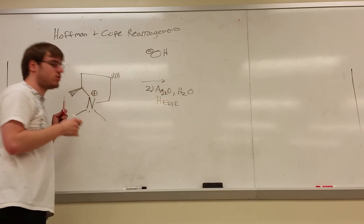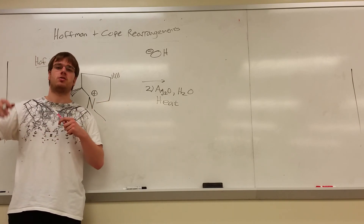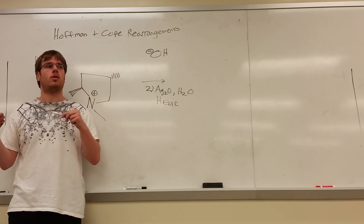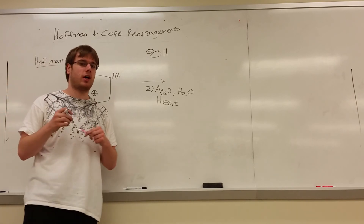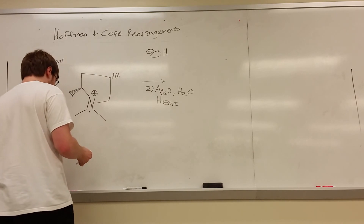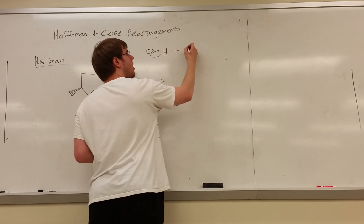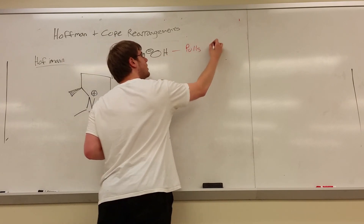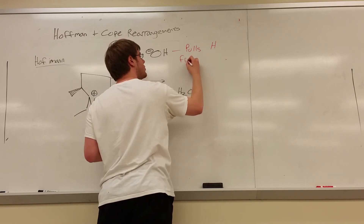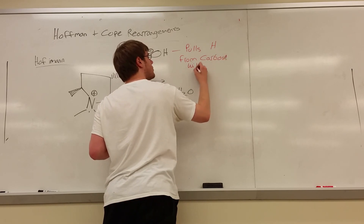Ag₂O and H₂O gives you OH⁻, but this isn't your typical OH⁻. Usually OH⁻ likes to pull off protons from the side that gives you the most stable, most substituted double bond — in other words, where there are the fewest number of hydrogens possible. The OH⁻ that you get from Ag₂O, however, follows the Hofmann rule. The Hofmann rule says this OH⁻, as a base, will pull off the hydrogen from the carbon with the largest number of hydrogens.